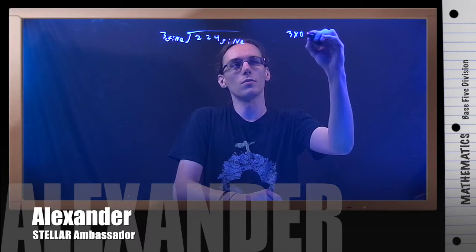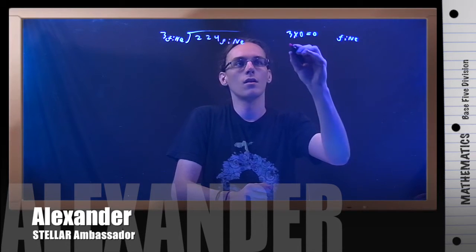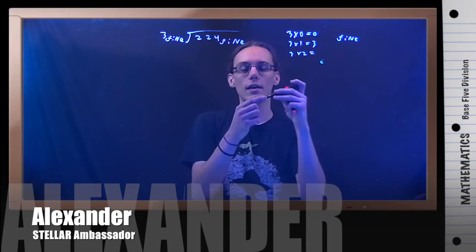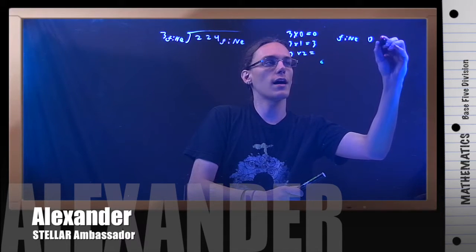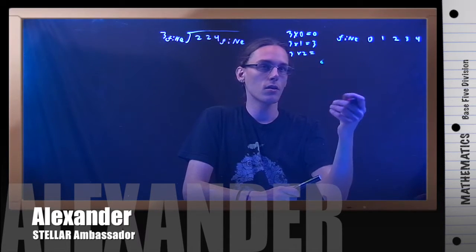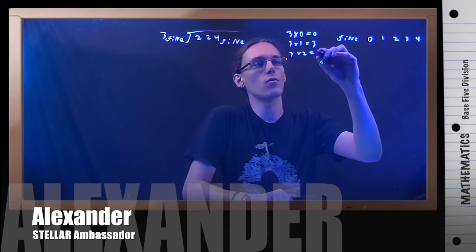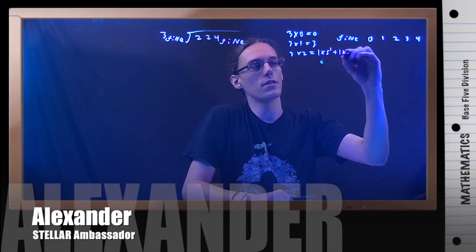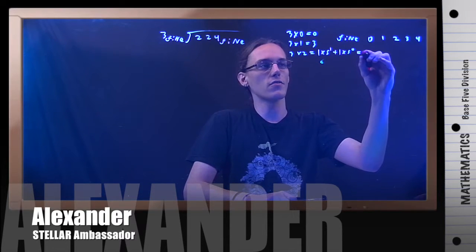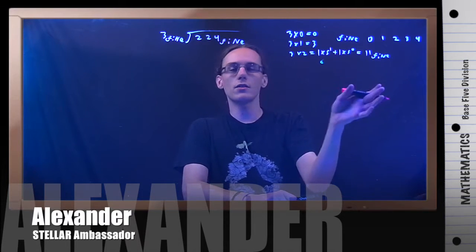We have to think about what we need to multiply 3 by to get 22 or something just below it in base 5. Let's write out the multiples of 3. These are all in base 5: 3×0=0, 3×1=3, 3×2=6 in base 10, which in base 5 is 1 group of 5 plus 1 group of 1, so that's 11 in base 5. That's still smaller than 22.